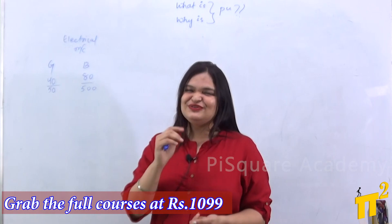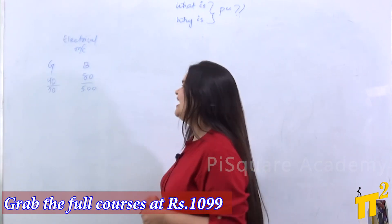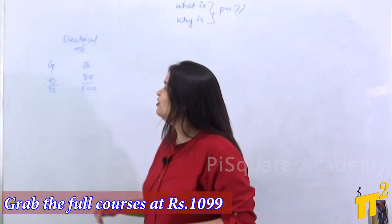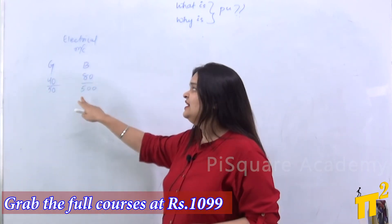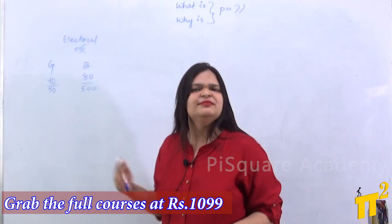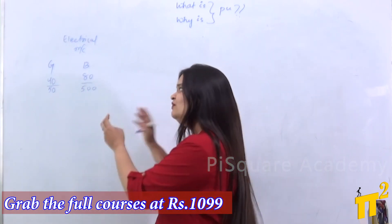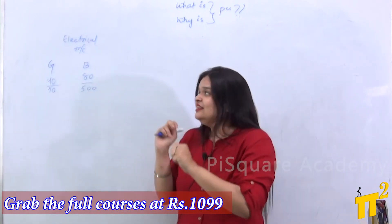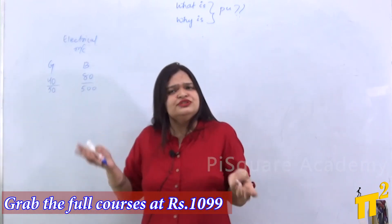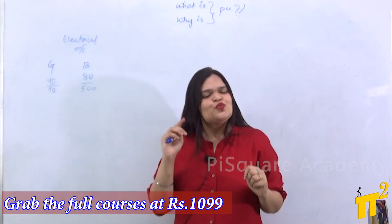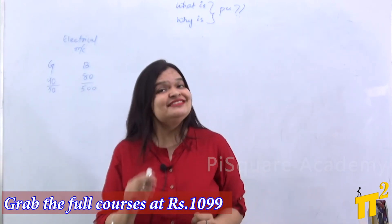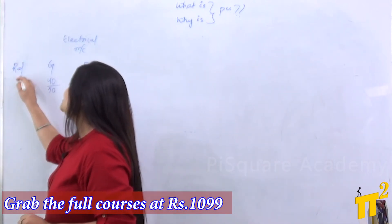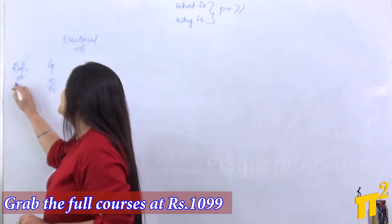She has scored 40 out of 50 in her college, and he has scored 80 out of 500 in his college. So now if we look at these scores and try to compare whose performance is better, we need a common reference or base according to which we need to compare both of them.